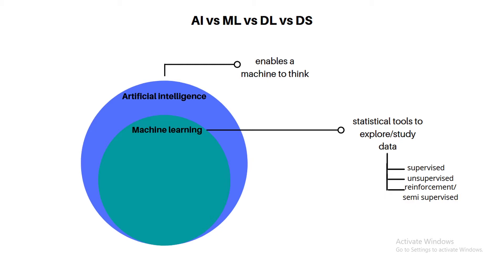Now, unsupervised machine learning — here we do not have labeled output data. Unsupervised machine learning solves clustering problems. In a dataset with a lot of data, we find similarities and create groups. This is clustering. Techniques used include k-means clustering, hierarchical clustering, and DBSCAN clustering.